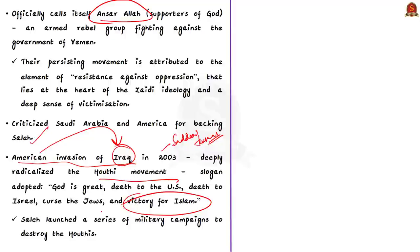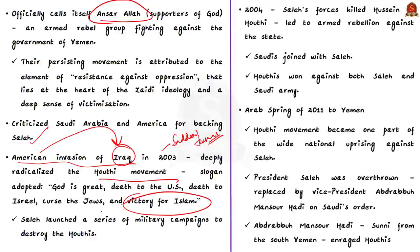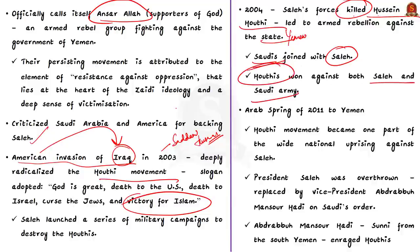After 2003, Saleh launched a series of military campaigns to destroy the Houthis. In 2004, the group leader Hussein al-Houthi was killed by Saleh's forces. The killing of their leader frustrated the Houthis, and there was a massive armed rebellion against the state and president. At this point, President Saleh was supported by the Saudis, but to the surprise of everyone, both Saleh and the Saudis were defeated by Houthis. This was the case until the first decade of the current century.